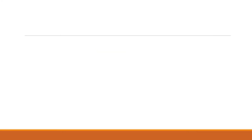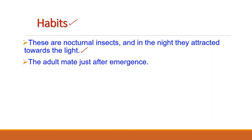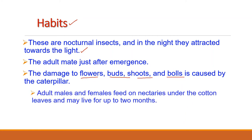Regarding habits, these are nocturnal insects — active at night — and they are also attracted towards light at night. The adults mate just after emergence. The main infective stage is the caterpillar; adults do not harm the plant but just lay eggs on it. The caterpillar feeds on different parts of the plant like buds, shoots, flowers, and bolls. Adults feed on nectaries under the cotton leaves and may live up to two months. In winter, the larvae undergo hibernation.